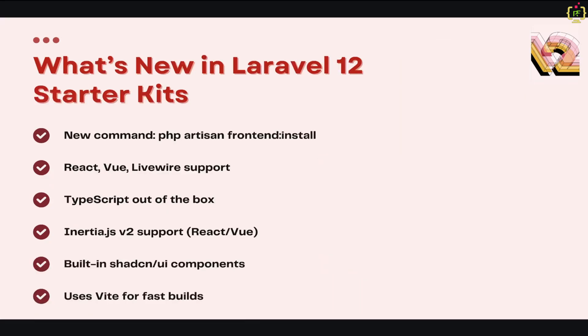Now let's talk about what is new in Laravel 12 starter kits. The key difference from previous versions is the new artisan command — `php artisan frontend:install`. Along with this command, you can pass a front-end stack like React, Vue, or Livewire, which lets you choose your preferred front-end stack right from the start.